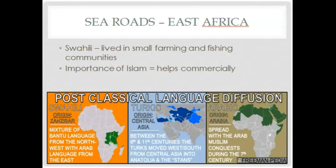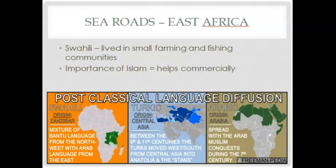Switching to East Africa, the Swahili people lived in small farming and fishing communities. Once Islam spread there, it linked them up to the Indian Ocean Trade Network commercially. They spoke Bantu mixed with Arabic and had a written Arabic script. Swahili culture became more Islamic, which helped them develop small chiefdoms and kingdoms that were absolutely essential. That wraps up this first part of the video.